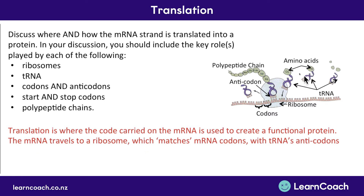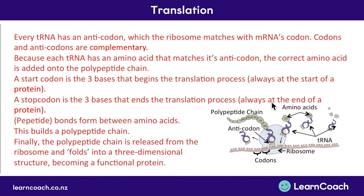The mRNA travels to a ribosome, which matches the mRNA codons with the tRNA anticodons. Every tRNA molecule has an anticodon on it which the ribosome matches up with the mRNA's codon. The codons and anticodons are complementary — they match up. Because each tRNA has an amino acid attached on top that relates to its anticodon, the correct amino acid is added onto the polypeptide chain to make the protein.